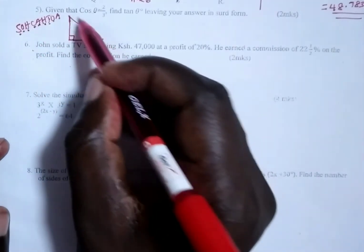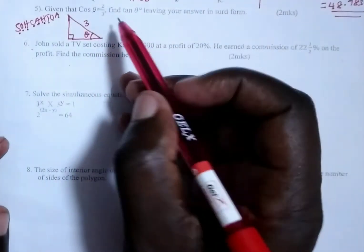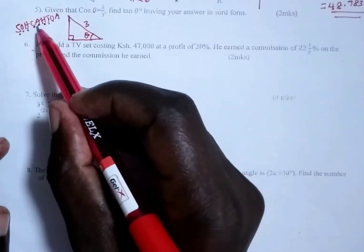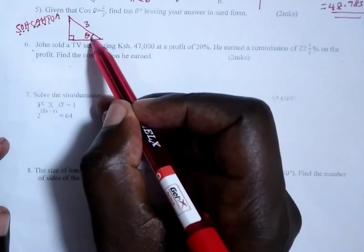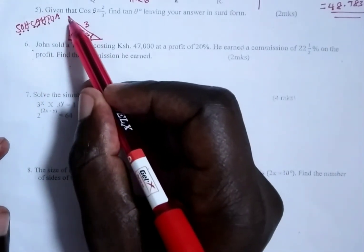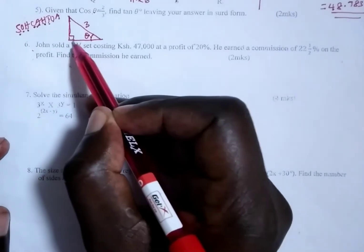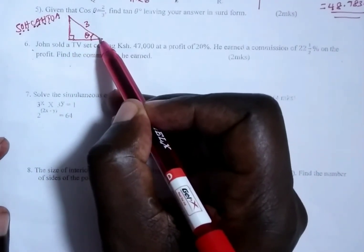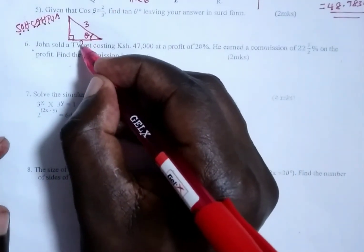The hypotenuse never changes—this is 3. And therefore, now we look for the adjacent. When this angle is at this point, this is the opposite side of this angle. This becomes the adjacent. The hypotenuse will always remain the hypotenuse, and therefore, this one is 2.